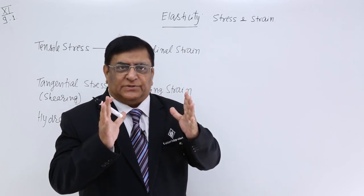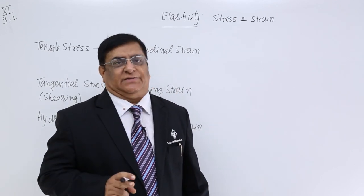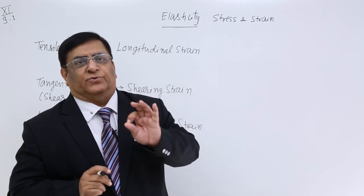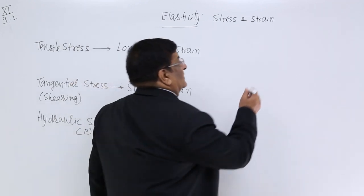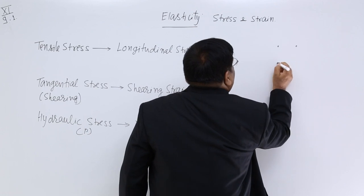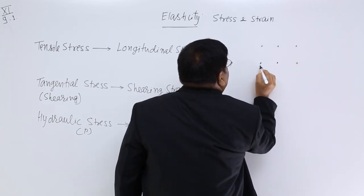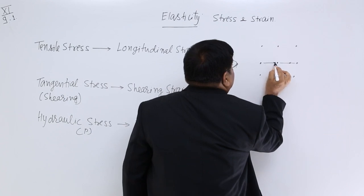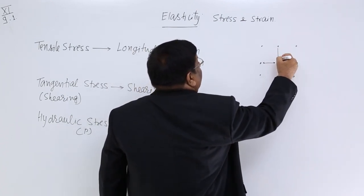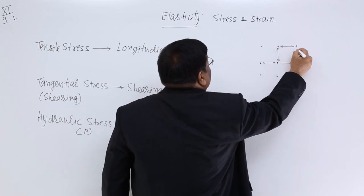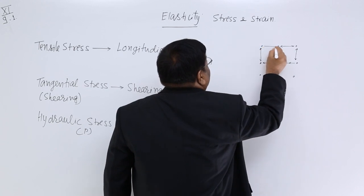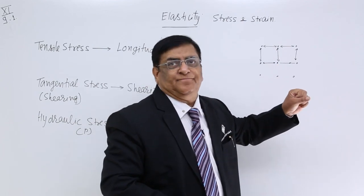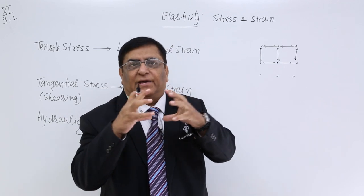Solids are those whose volume is fixed and whose shape is fixed. The molecules of the solid are bound to each other with a particular force — we will simply call it intermolecular forces. The molecules are applying forces on each other, and after adjustment they come to a particular equilibrium distance. All molecules are applying force on each other; this is force of attraction, and that is why they stay together.